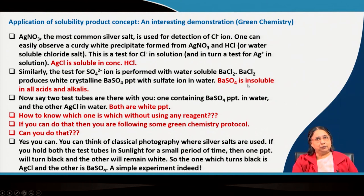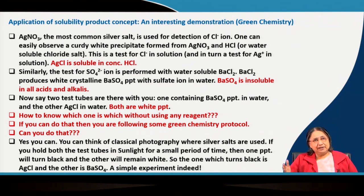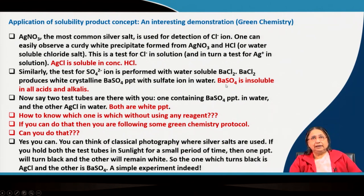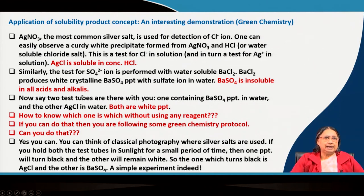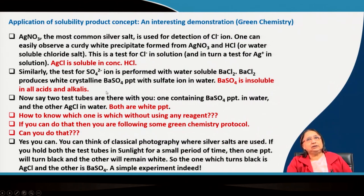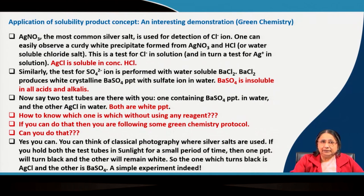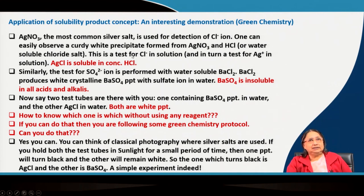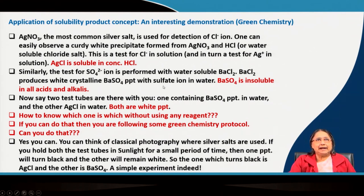The properties of silver chloride and barium sulfate are different. Silver chloride is a curdy white precipitate that sticks to the surface of the test tube, whereas barium sulfate is a crystalline precipitate. Barium sulfate is insoluble in all acids and alkalis. Silver chloride is soluble in concentrated HCl. So, if you add HCl to one precipitate it will dissolve and in the other it will not — the one that dissolves is silver chloride and the one that does not is barium sulfate. However, this approach of adding chemicals is not a green chemistry approach.